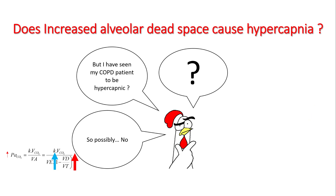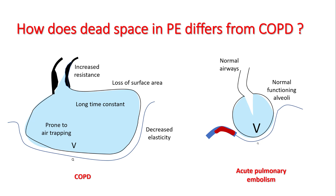We'll try to understand why that happens. The difference lies in the alveoli of these two diseases. In COPD, you deal with increased resistance and loss of elasticity of the alveolar walls; these alveoli have long time constants and are prone to air trapping. In pulmonary embolism, you have normal airways and normal functioning alveoli, but unfortunately there is no flow to these alveoli because of the clot.